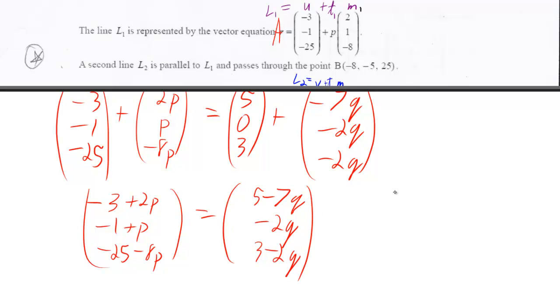And then if we want these all to be equal to each other, then we want negative 3 plus 2P to be equal to 5 minus 7Q. We want negative 1 plus P to equal negative 2Q. And we can keep going. We want the third one to be equal to the third one. But since we only have two unknowns, we actually only need two equations.